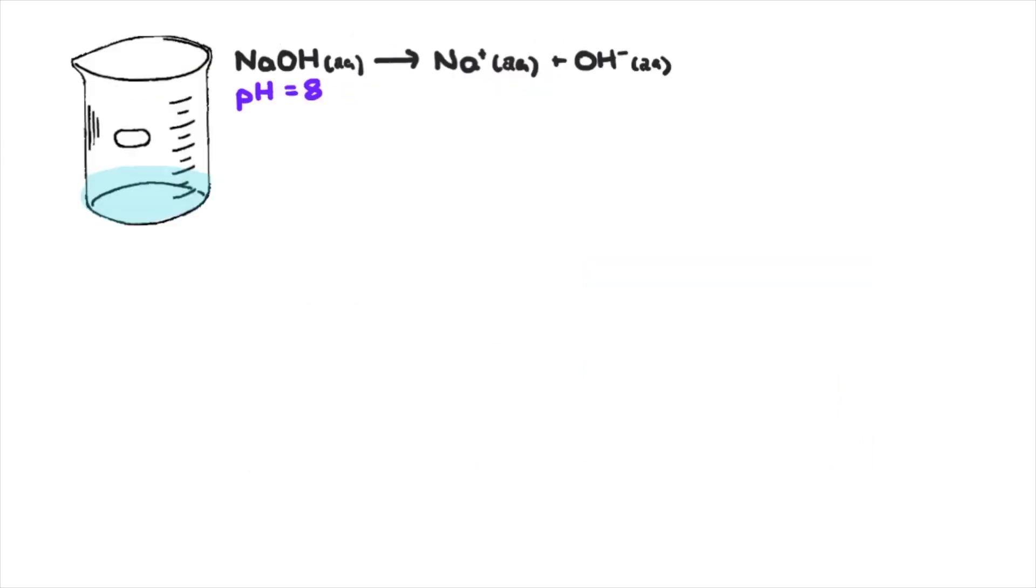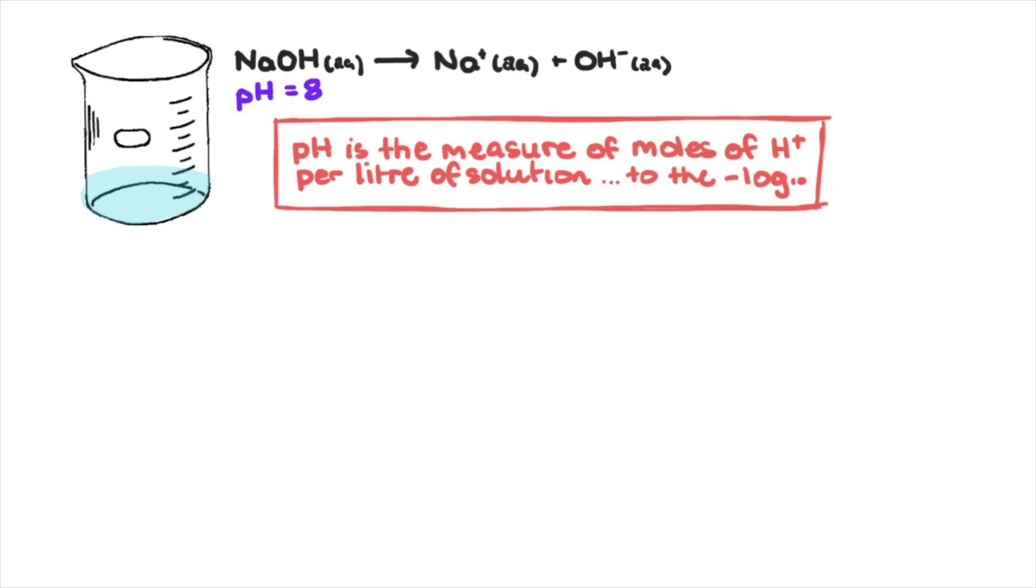Consider you take an alkaline solution with a pH of 8. This already tells us that there is a very small concentration of hydrogen ions per liter of water. But that's the key—it's a measure of moles of hydrogen ions per liter of water. If we convert this pH into concentration using 10 to the negative pH, we get 1 times 10 to the negative 8.